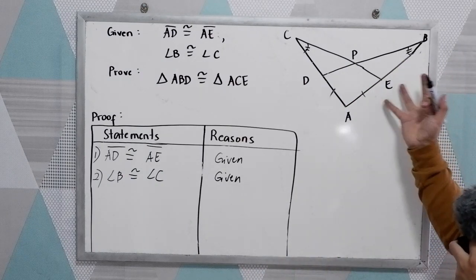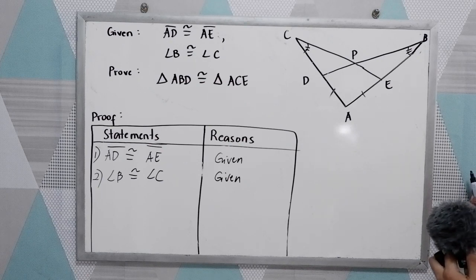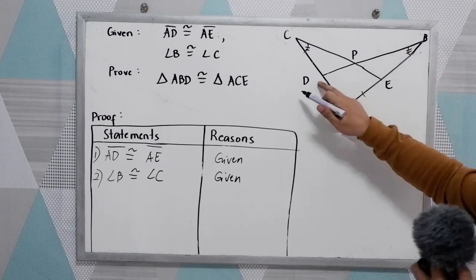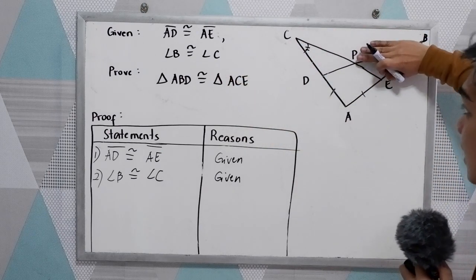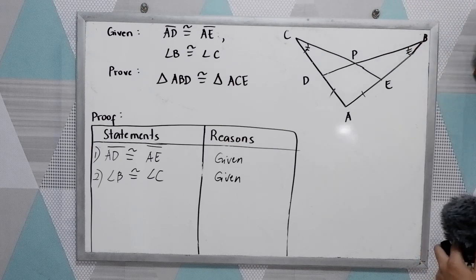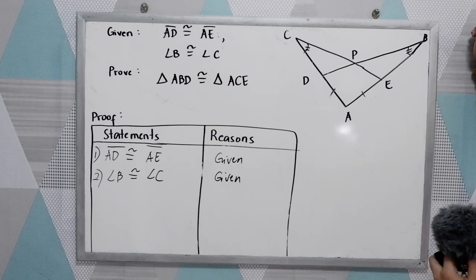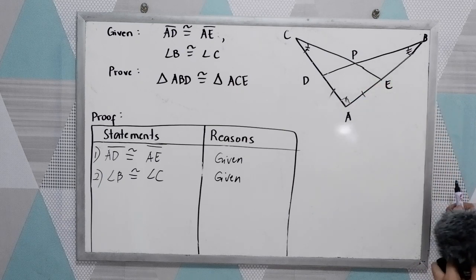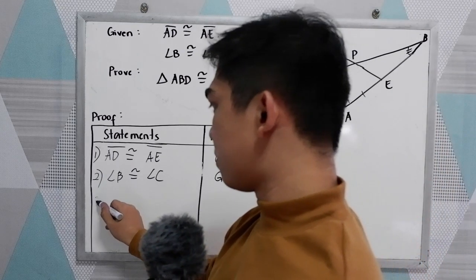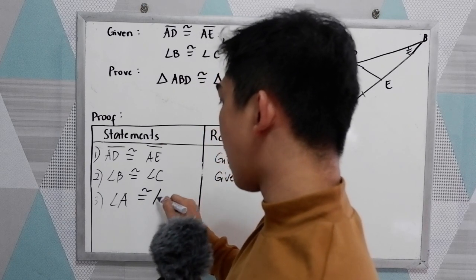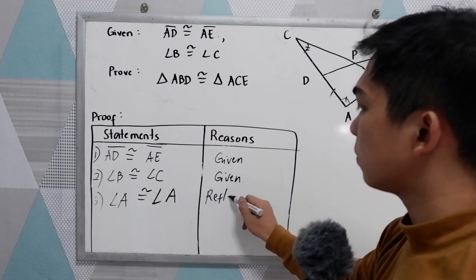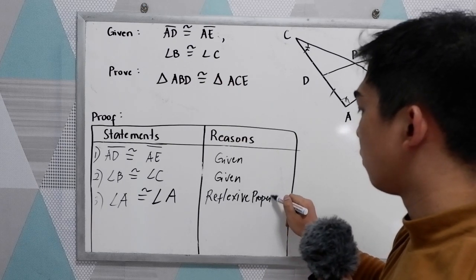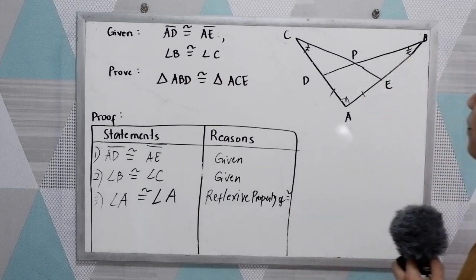Now study our diagram, or our illustration. Notice that we have a common angle, which is angle A, which is here. So the third statement will be: angle A is congruent to angle A. Our reason is the reflexive property of congruence.